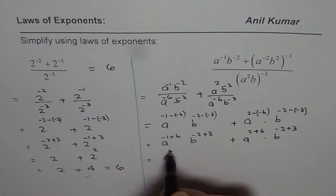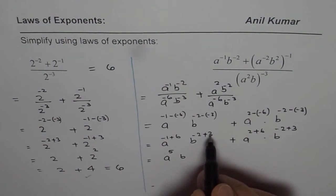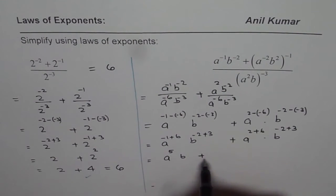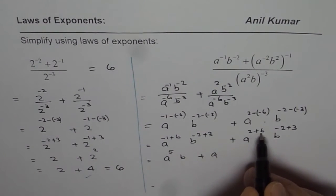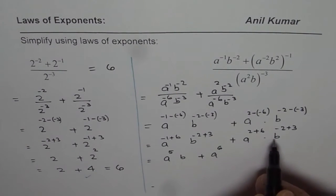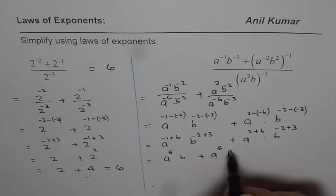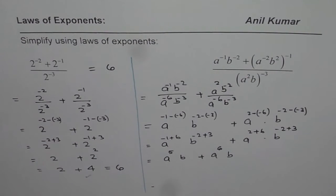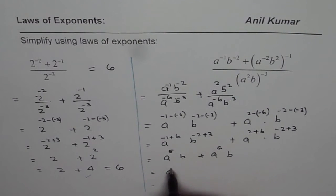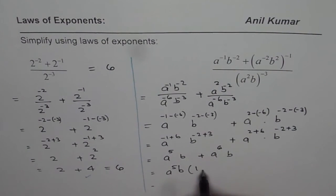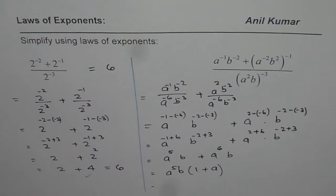Simplifying: A to the power of 5, B to the power of 3 minus 2, which is 1, plus A to the power of 2 plus 6, which is 8, times B to the power of minus 2 plus 3, which is 1. So the expression simplifies to A to the power of 5 times B plus A to the power of 8 times B. If you want, you can factor out A to the power of 5 times B and write it as A to the power of 5 B times the quantity 1 plus A cubed.